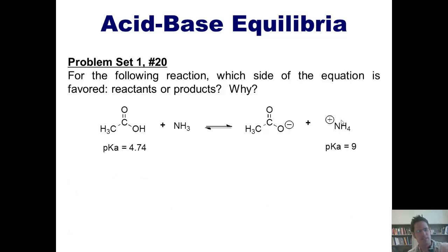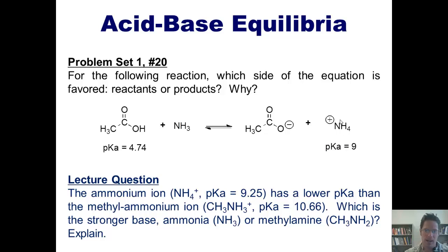And here's another question, just for thought. The ammonium ion, whose structure is shown here, has a pKa of 9.25, and it has a lower pKa than the methyl ammonium ion shown here. Which is the stronger base, ammonia or methyl amine? And explain.